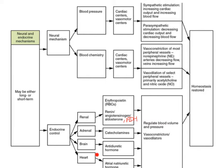Finally, the heart, in response to high blood pressure, will release atrial natriuretic hormone, also called atrial natriuretic factor. As the atria are stretched and this hormone is released in response to high blood pressure, it promotes the excretion of salts, which in turn promotes the loss of water from the bloodstream. Therefore, we urinate more, blood volume decreases, and blood pressure comes down.